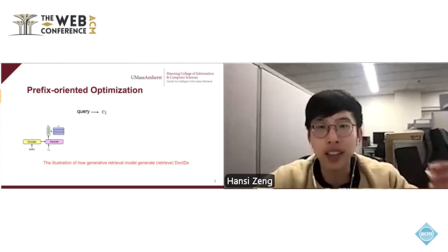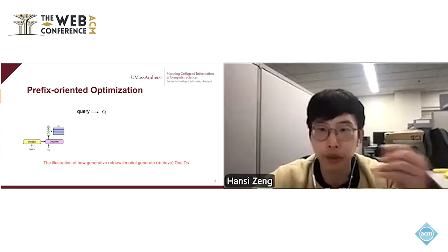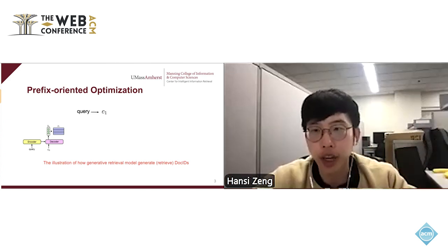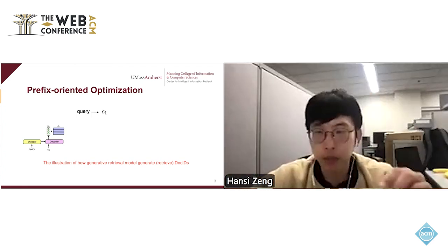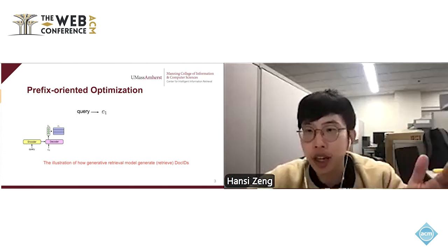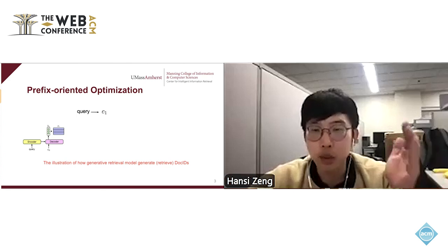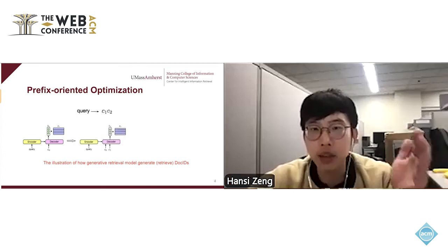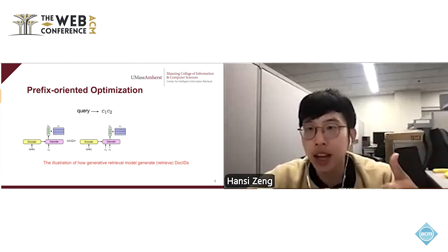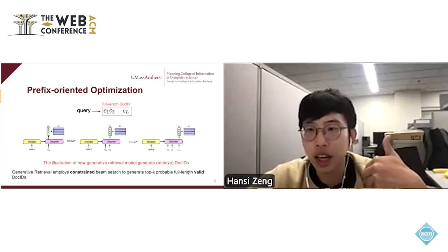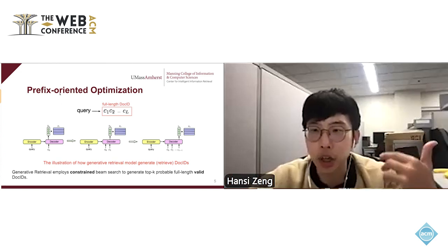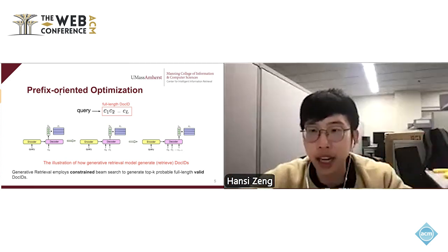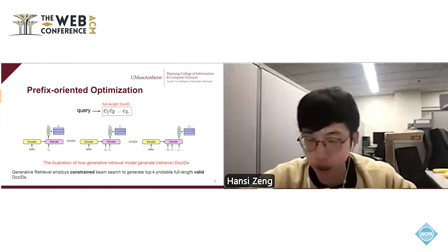To understand why we need prefix-oriented optimization for GR models, I will illustrate how GR models retrieve relevant documents. Given a query, the GR model takes the initial token C0 to generate the next token C1, then based on C0 and C1 it generates C2, and so forth, until it generates the full token ID. It's a sequential search diagram that generates tokens autoregressively from left to right. We can use constrained beam search to generate the top-K probable token IDs in this sequential generation process.